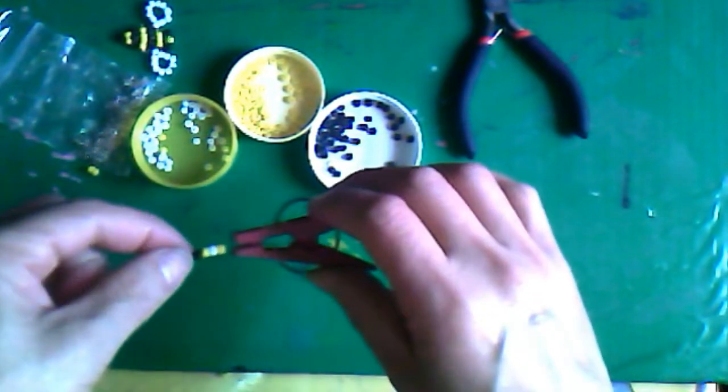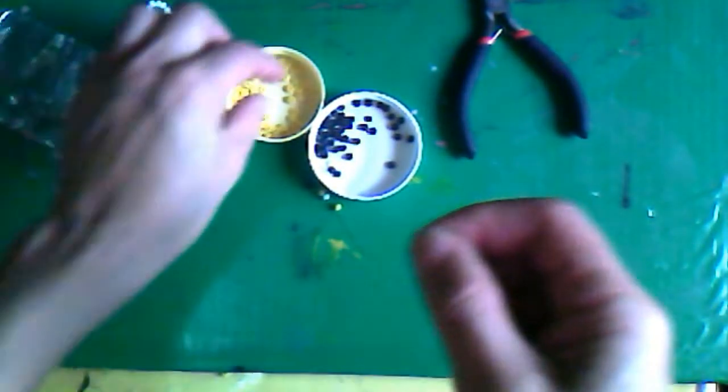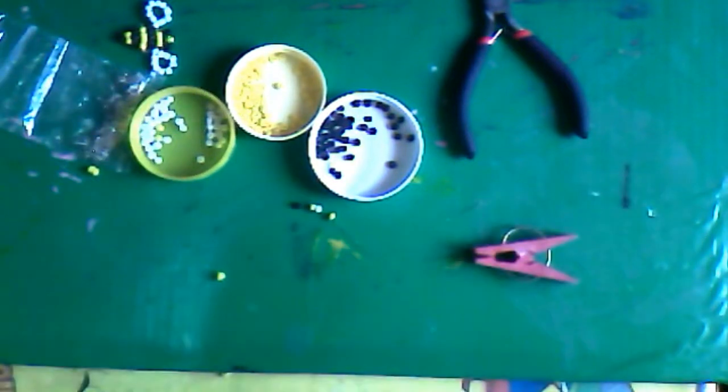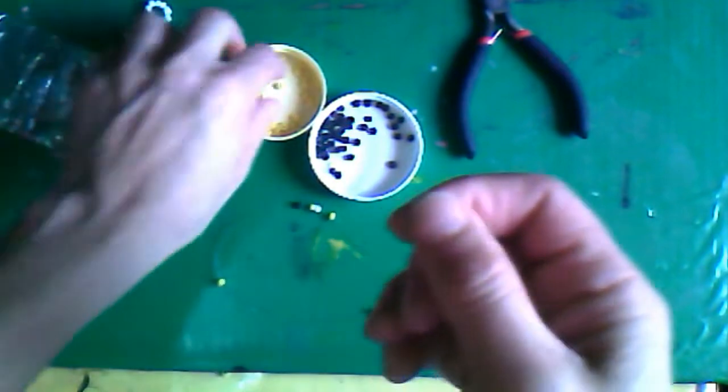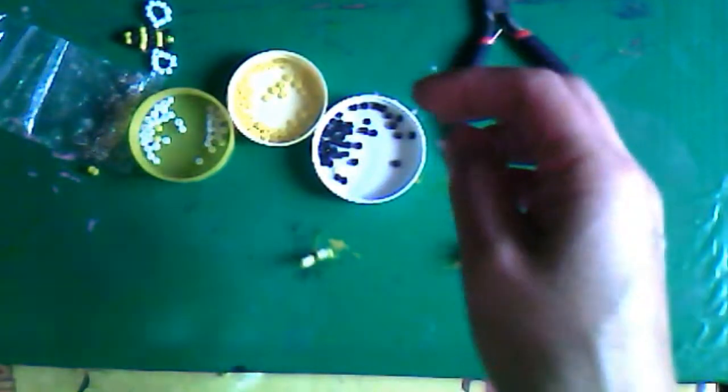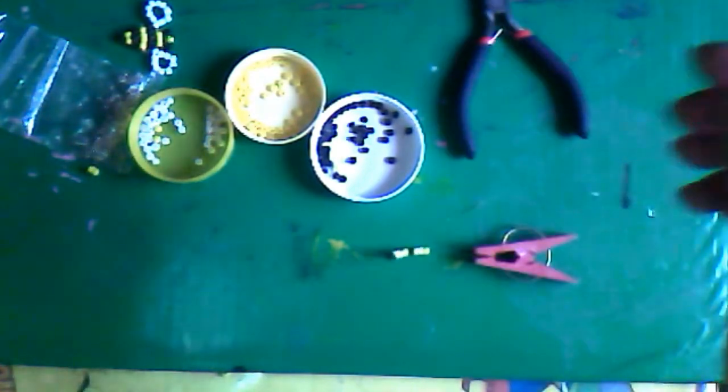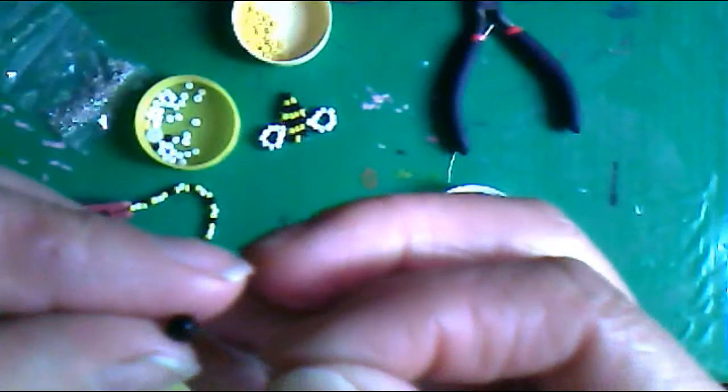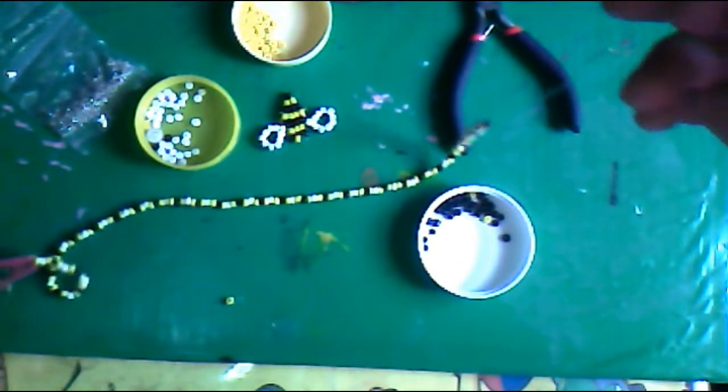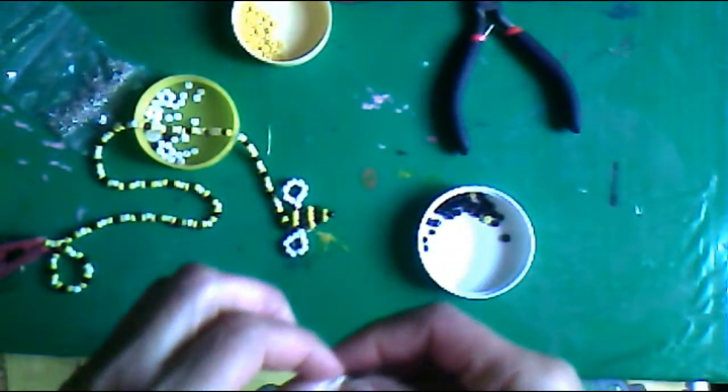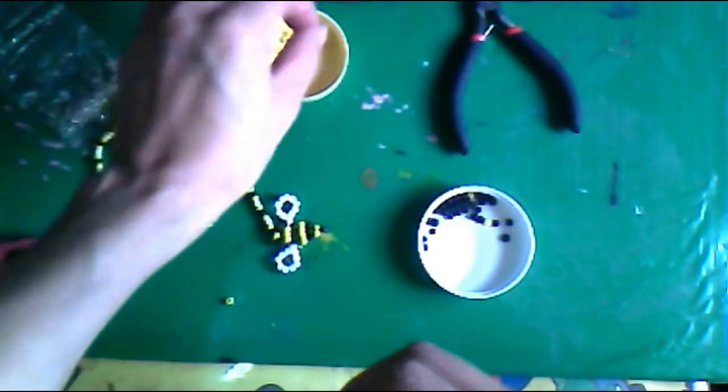Ahora vamos a hacer lo mismo. Una amarilla una vez más, la blanca, otra amarilla, y así la negra. Y así le voy a seguir hasta que termine todo mi hilo elástico. Cuando estés por terminar, le vamos a meter la abejita en la parte del medio, en el amarillo. Y se la pasamos y continuamos con la misma secuencia.